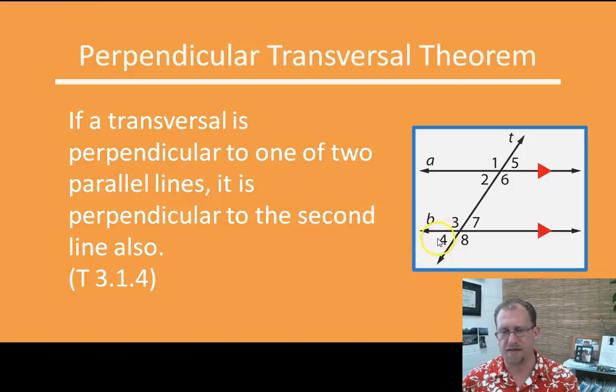So if this angle happens to be 90 degrees, which it's not drawn that way, but if it is, if this is 90 degrees, then the corresponding angle has to also be 90 degrees, right? And so if it's parallel, if these two lines are parallel, and this is a right angle, then this must also be a right angle. It's pretty easy to demonstrate.